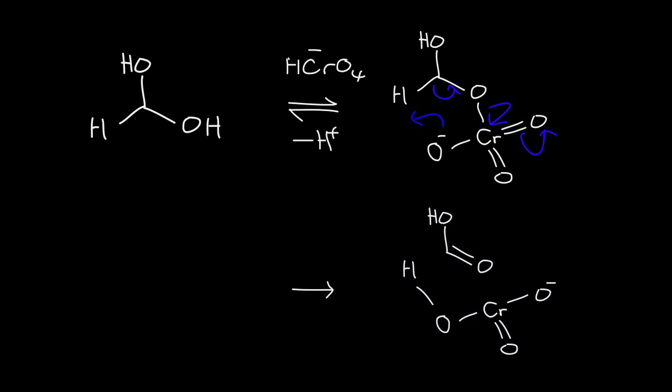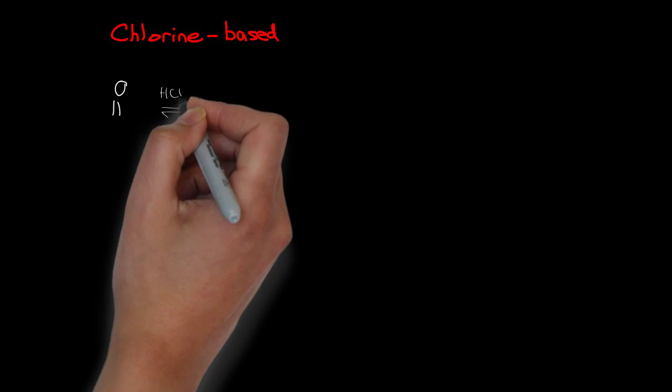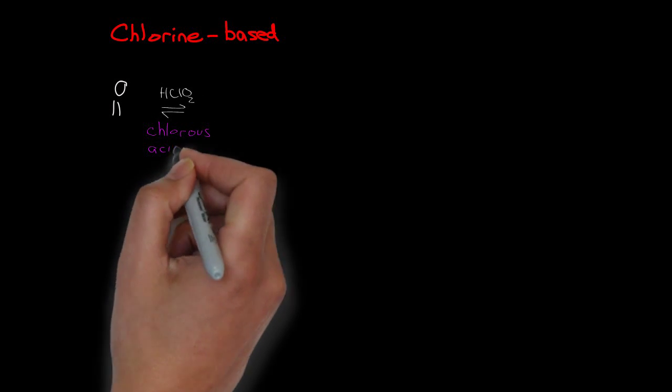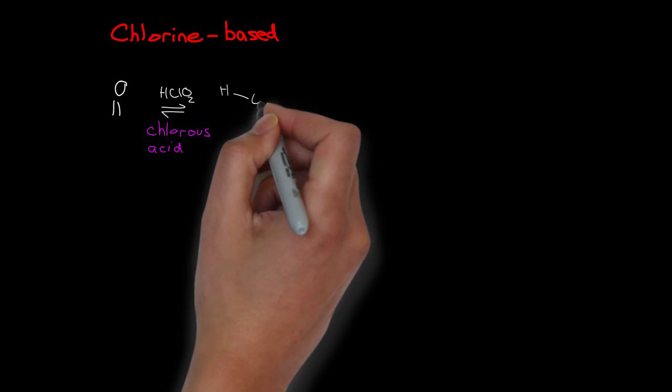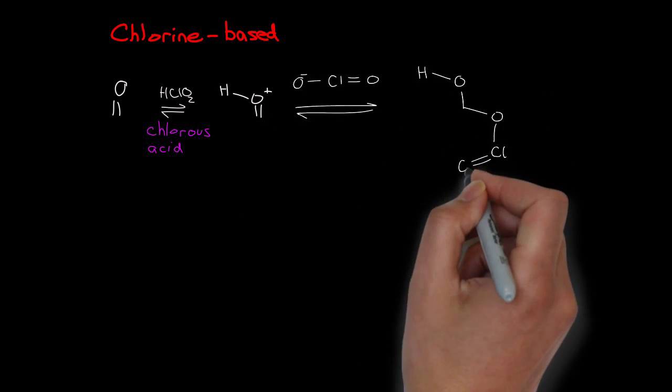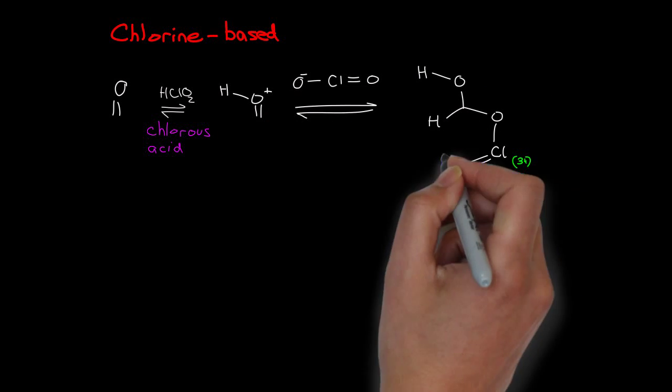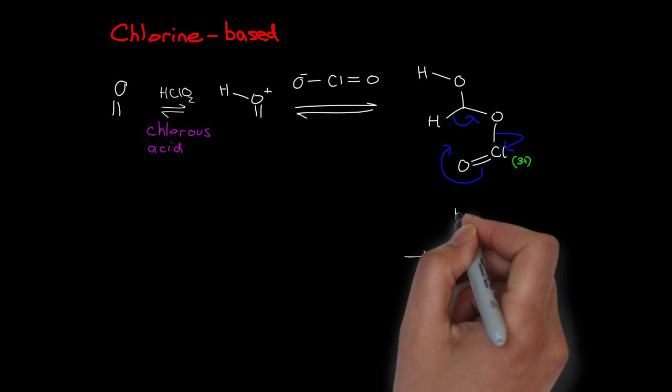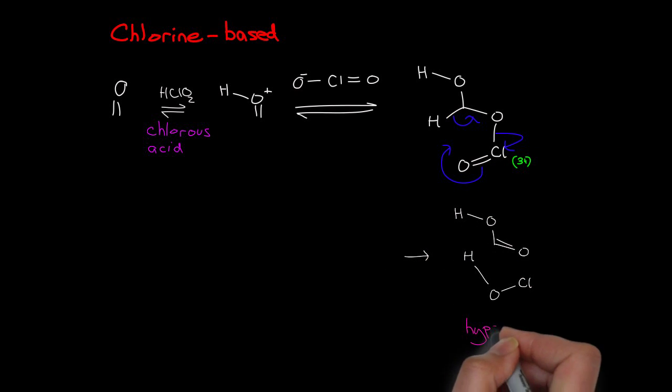For an example of a chlorine-based reagent, let's consider chlorous acid, which is chlorine in the plus-3 oxidation state. That will add to the aldehyde, again giving a species which can undergo a beta-elimination reaction. In so doing, reduces the chlorine to plus-1 and generates an acid.